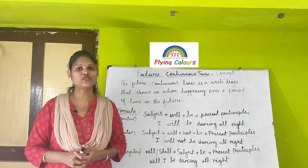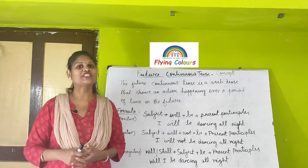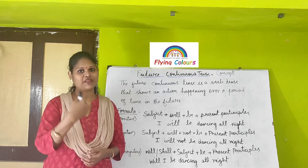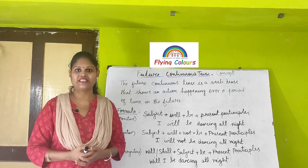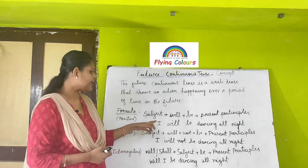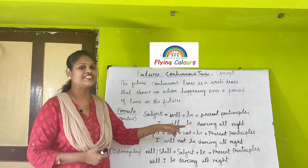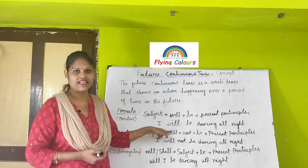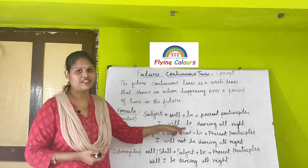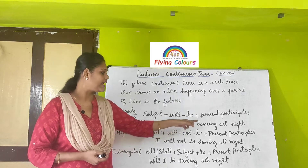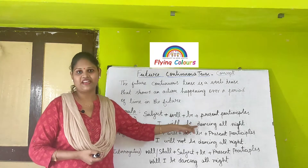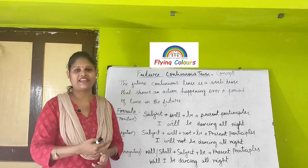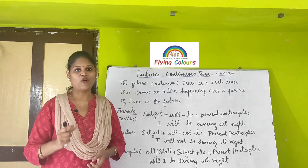The formula for future continuous tense for positive sentences is: subject plus will plus be plus present participle. For example, 'I will be dancing all night.' Here, 'I' is the subject, 'will' is the helping word, 'be' comes in the formula, and 'dancing' is the present participle.